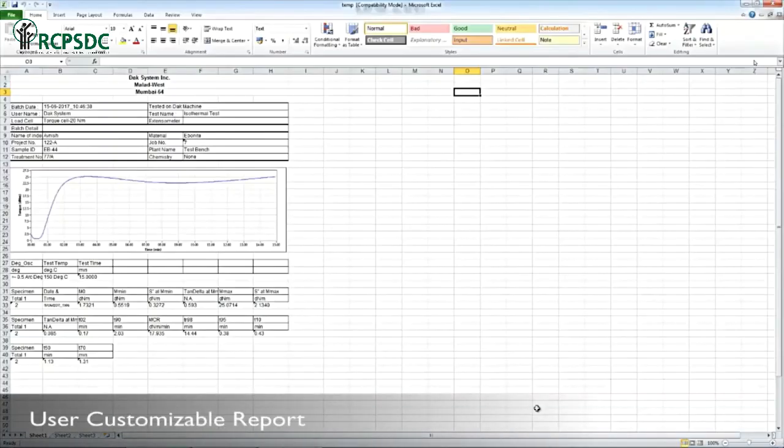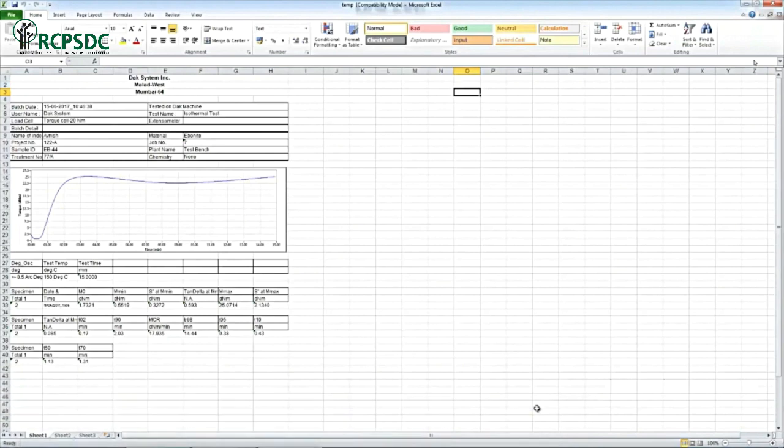After completion of the test, a test report will be generated with a rheometric curve, which is a fingerprint of compounds' curing and processing behavior. Parameters like ML, MH, TS2 and T90 will also be mentioned in the report.